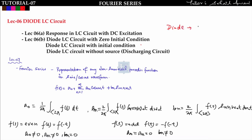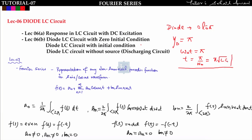The conduction angle of the diode is from zero to pi. So the conduction time is: omega_naught × t = pi, therefore conduction time = pi / omega_naught = pi × √(LC). Take note: the conduction time of the diode in all three cases will be π√LC.